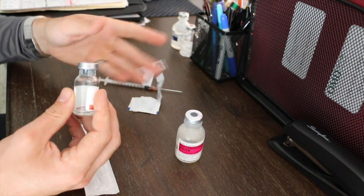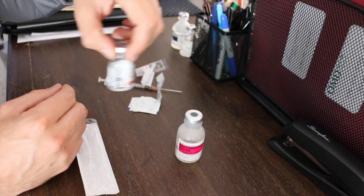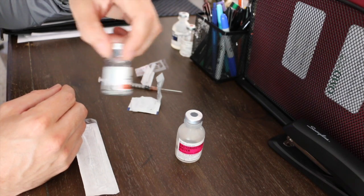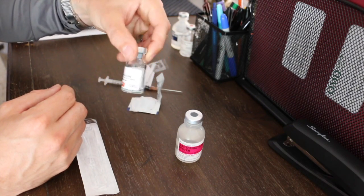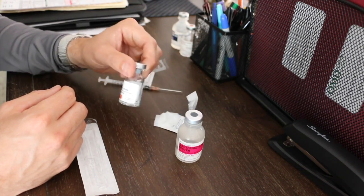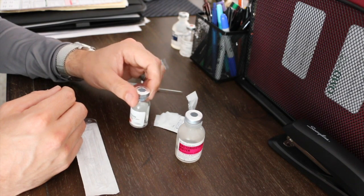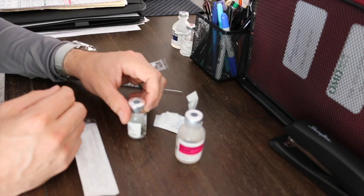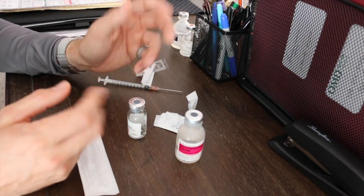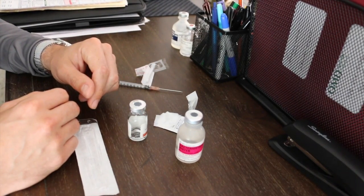Then just swirl it real lightly. Make sure to read the directions because certain compounds you have to let them sit for 20 to 30 minutes, some are ready to go instantly. HCG is ready to go instantly, but you just give it a little swirl. HCG specifically has to be refrigerated, so make sure you read the instructions. If it needs to be refrigerated, find out what temperature. If not, just keep it in a cool dry place. That's pretty much it. If you have any questions, just comment below.